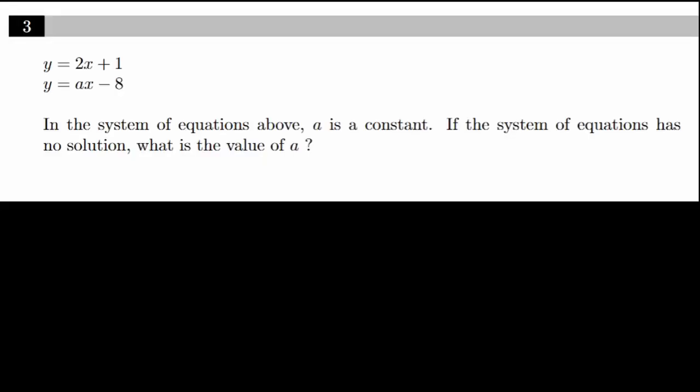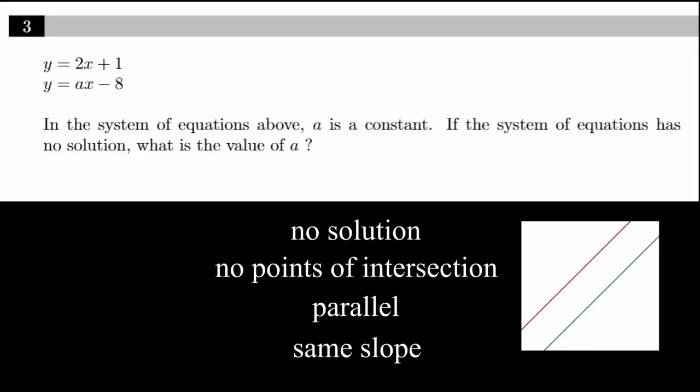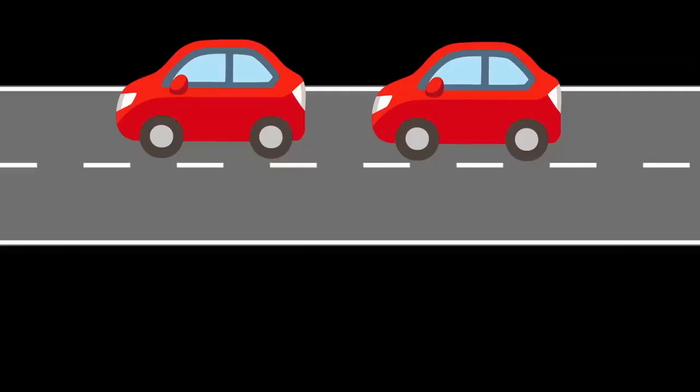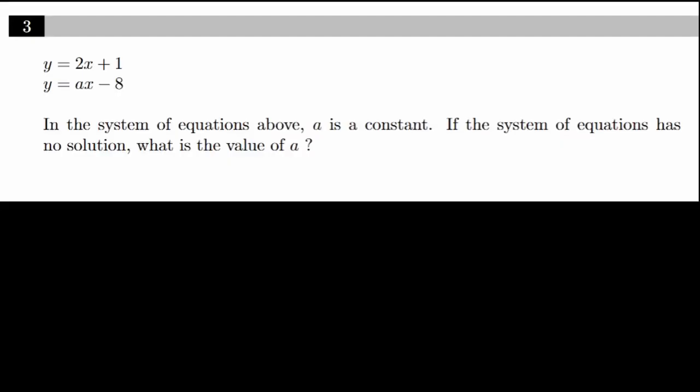For example, take this problem. You're given two lines and asked if the system of equations has no solution, what is the value for A? Well, if two lines have no solution, that means they never intersect. If two lines never intersect, that means they're parallel. If two lines are parallel, they share the same slope. I like to think of this as two cars traveling one behind the other. If they're going the exact same speed, they're never going to crash, just like how two lines that increase at the same rate are never going to intersect. So this question is very simple. We just want the slope of the second equation to be the same as the slope of the first equation. So A equals 2.